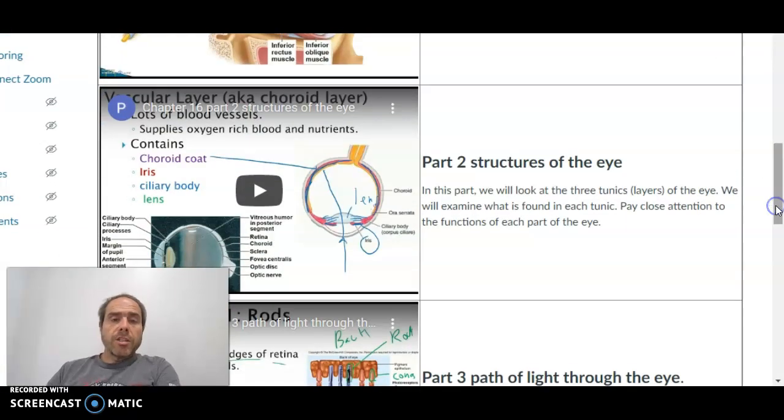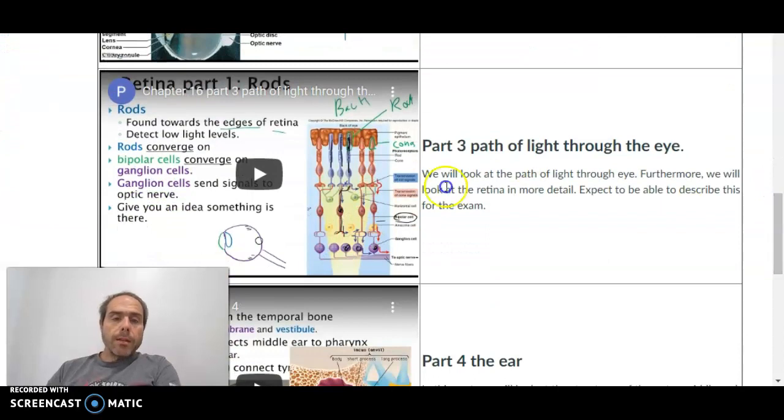So protection of the eye, structures of the eye, I'll ask you what the layers are. There will be a question, what is the path of light through the eye. So make sure you know that. And we're going to talk about rods and cones.